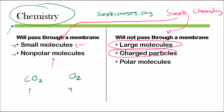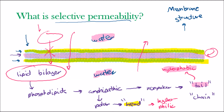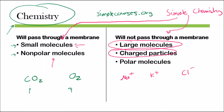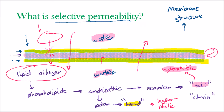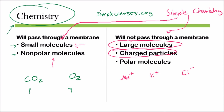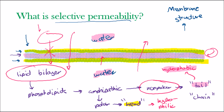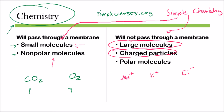Charged particles also cannot pass through the membrane — for example, sodium or potassium ions, or the chloride anion. The reason they can't pass is because the hydrophobic region in the middle is non-polar, and non-polar substances don't like to mix with charged substances due to the charge imbalance. So charged particles can't pass through the membrane.